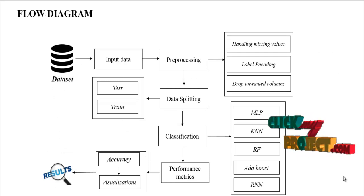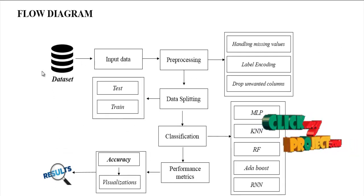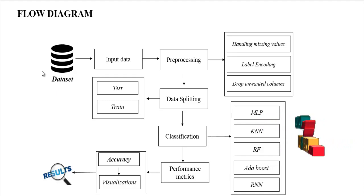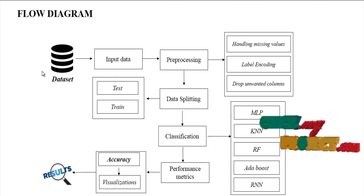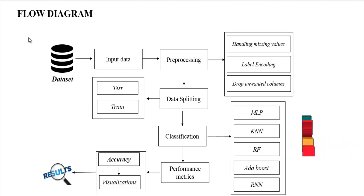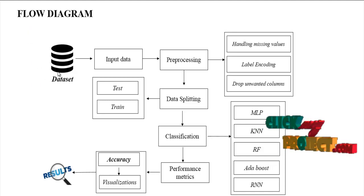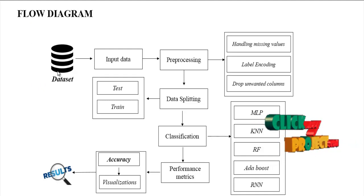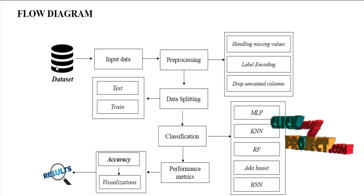Now we are going to see the flow of our process. First, we have to take the input dataset. In our process, the dataset name is Bot IoT. The dataset was collected from the dataset repository like the UCI repository and so on.